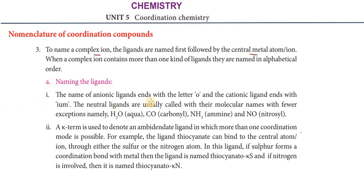The name of anionic ligands ends with the letter 'O', and cationic ligands end with 'IUM'. Neutral ligands are usually called by their molecular names with a few exceptions: H2O is called aqua, NH3 is ammine, NO is nitrosyl, and CO is carbonyl. These are the neutral ligand special names.